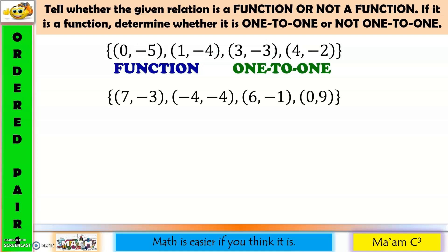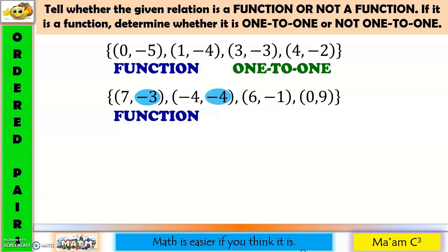Another one. X values are 7, negative 4, 6, and 0. Is there any x value that has been repeated? None. Therefore, this is a function. How about the y values? We have negative 3, negative 4, negative 1, and 9. Is there any y value that has been repeated? None. So this means it is a one-to-one function.